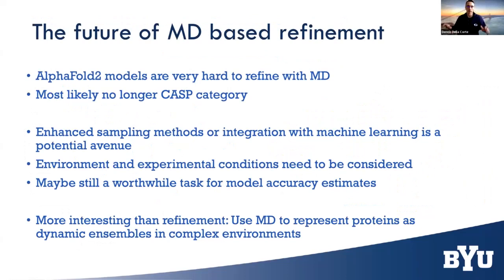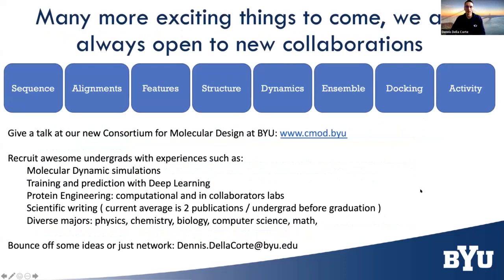Where does refinement go from here? It is very hard to refine deep learning models like AlphaFold2. We no longer expect refinement to be a category within CASP. Any enhancements that might be possible would likely require integration of machine learning. Personally, I'm most interested in moving away from using MD to refine protein structures, and instead using it to assess the quality of structures and to represent structures in more complex environments like the cell, which machine learning will probably not be able to represent in the near future.